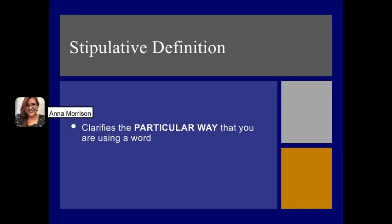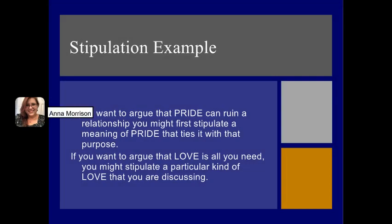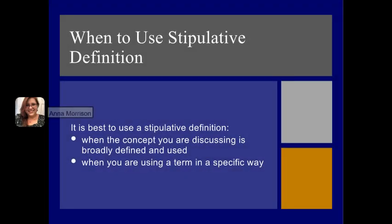The next kind of definition is a stipulative definition. This stipulates or clarifies the particular way that you are using a word that has different ways to be defined. For example, if you want to argue that pride can ruin a relationship, you might first stipulate a meaning of pride that ties in with that purpose. Or if you want to argue that love is all you need, you might stipulate a particular kind of love that you are discussing. It is best to use a stipulative definition when the concept you are discussing is broadly defined and used, and you want your specific use of the term to be very clear to your audience.